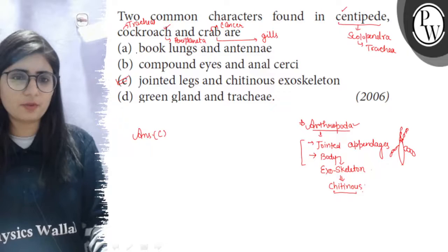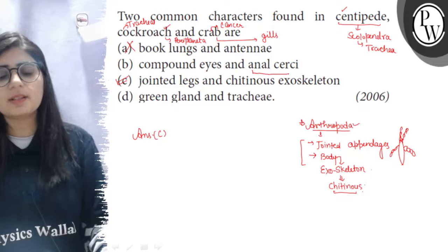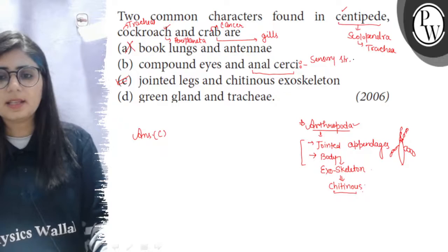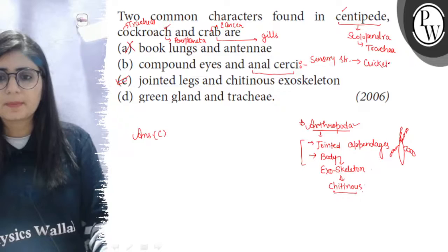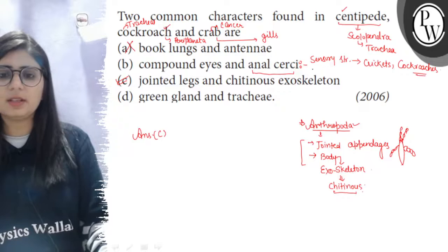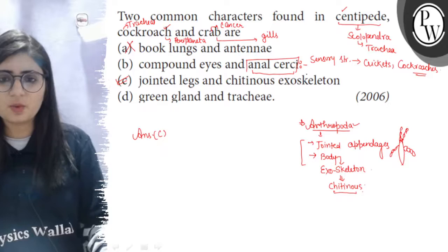So it is discarded. Now compound eyes and anal cerci - so presence of anal cerci, these are sensory structures, and these are present in some arthropods like in case of crickets and cockroaches. There are sensory structures on their posterior end and these are meant for sensing the vibration, sound and touch. So these structures are not present in all of these.